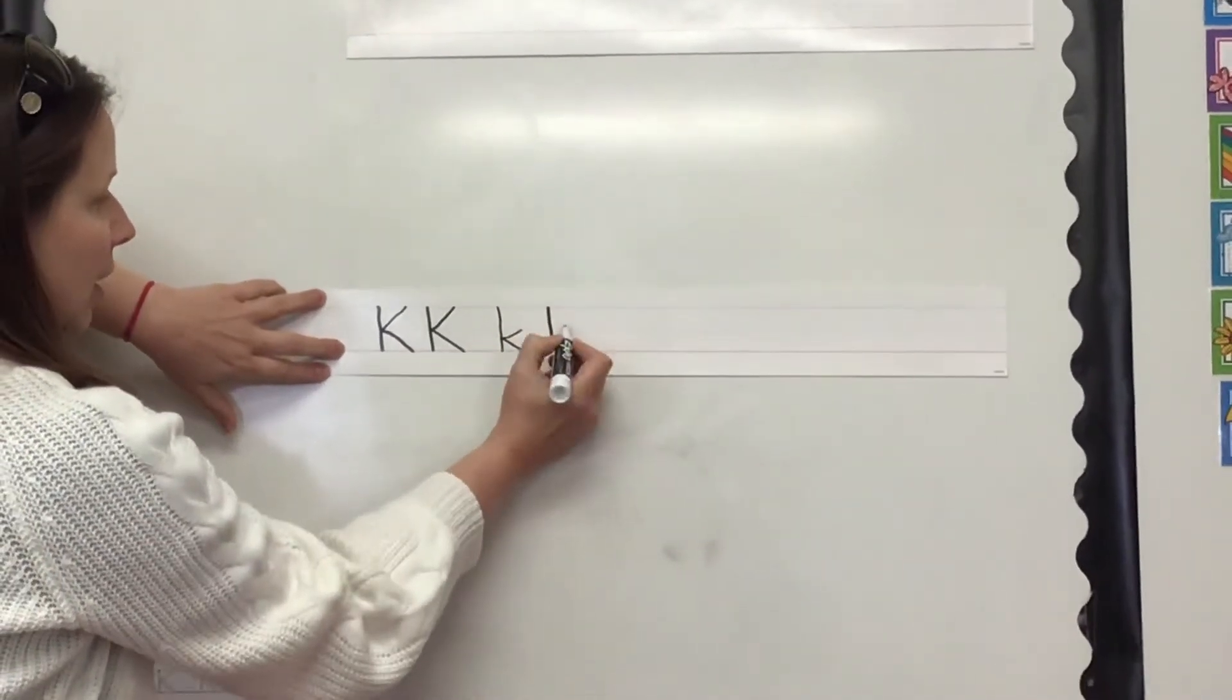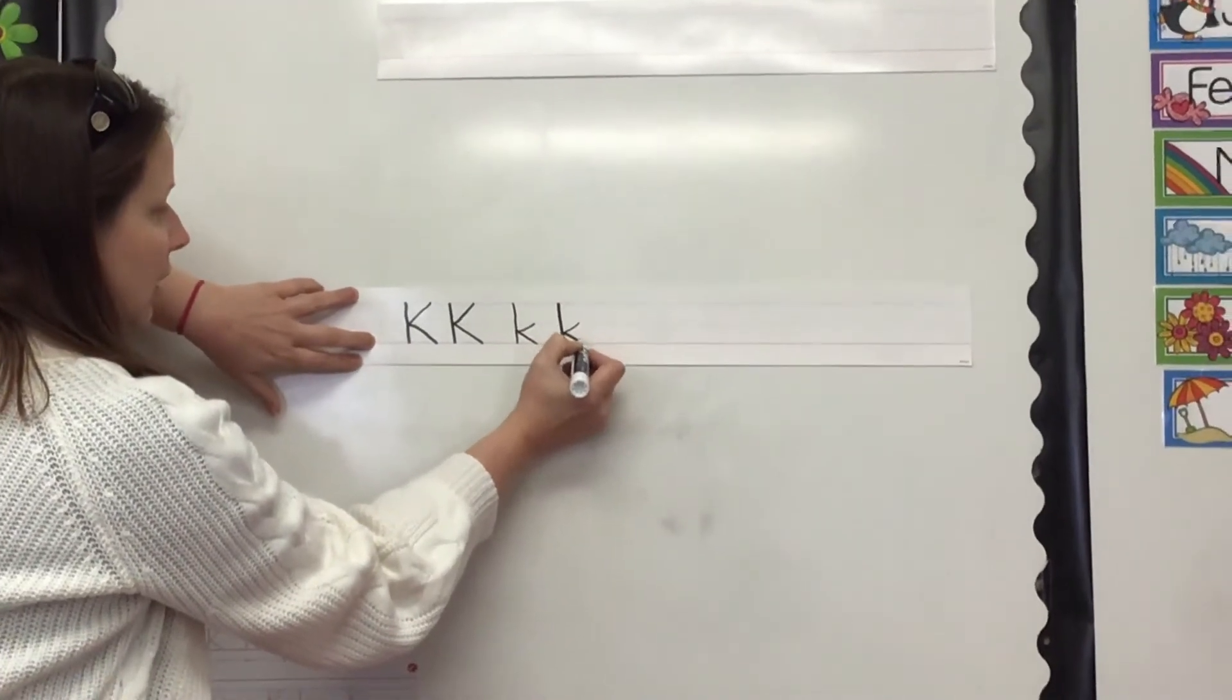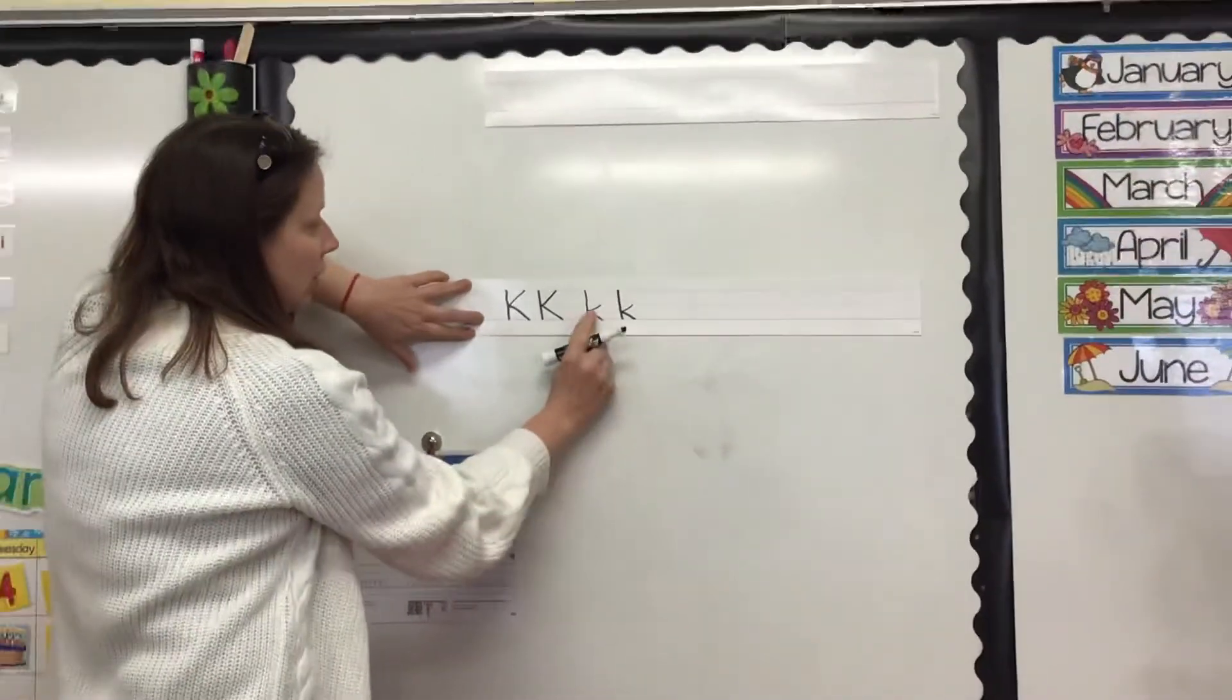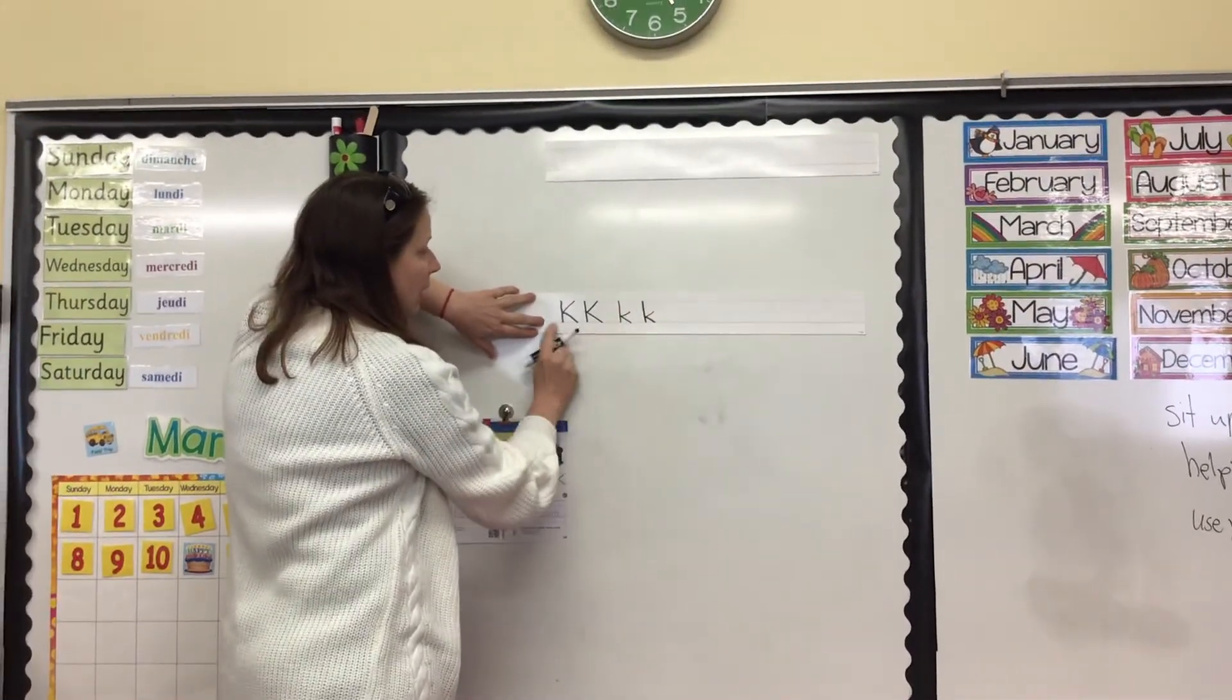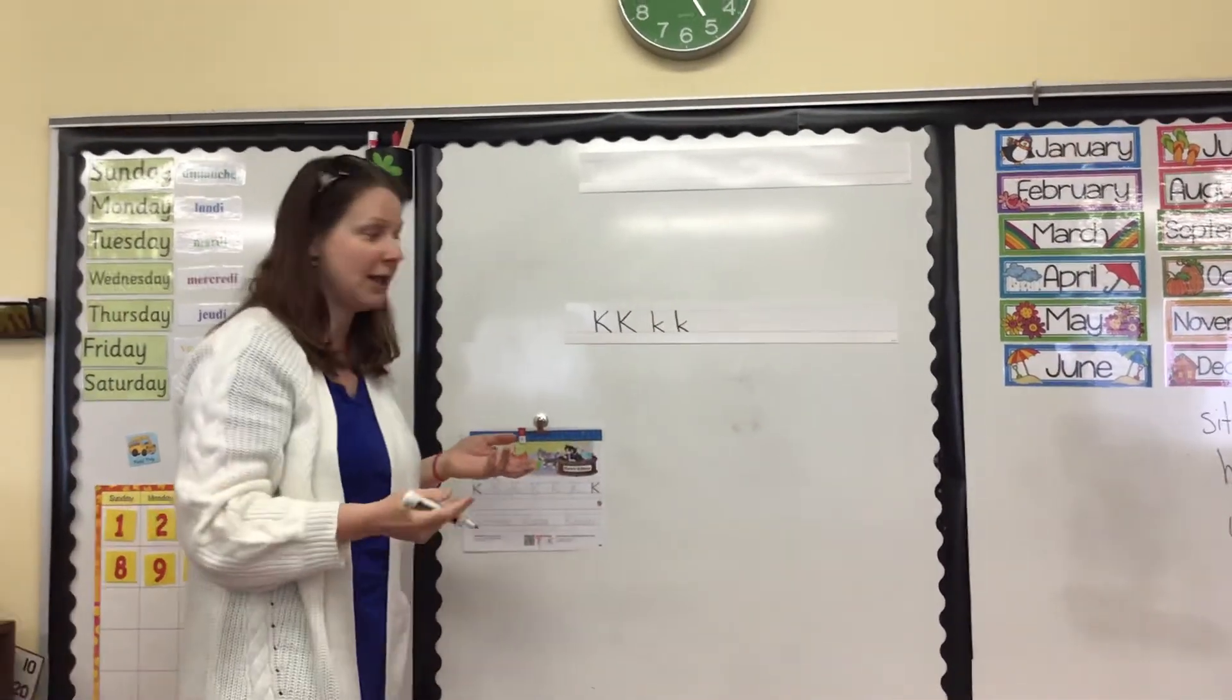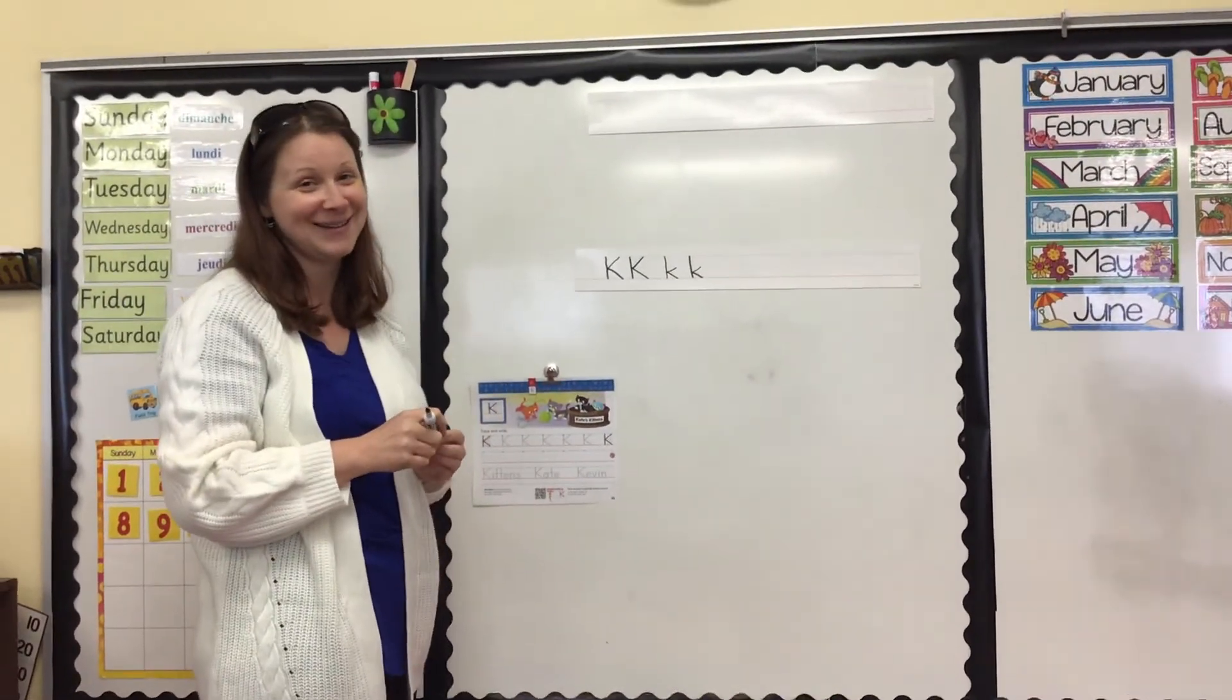Tall plop, whee in the middle, and whee to the ground. Make sure you go nice and slow to make sure that your lowercase K's and your uppercase K's do not look the same. I hope you have an okay-dokie day! Bye!